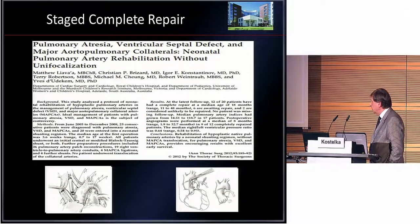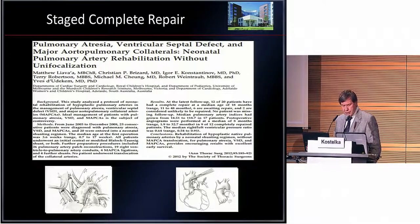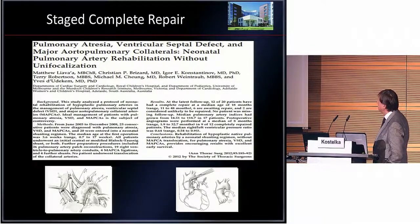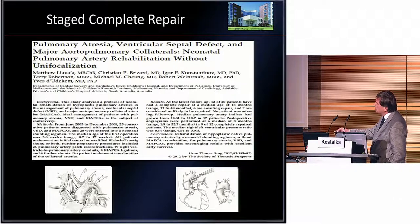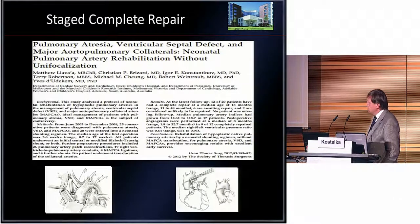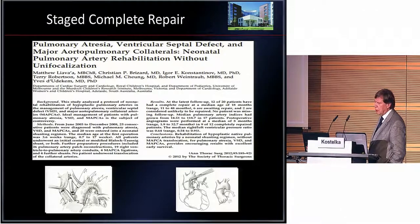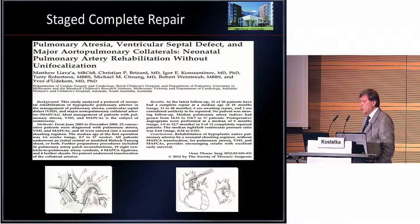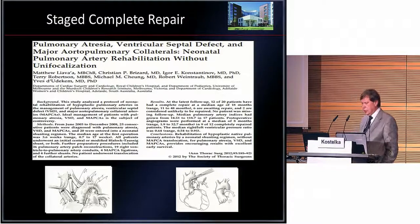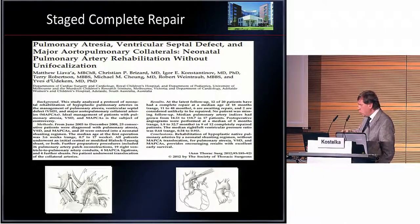Regarding staged complete repair, we look at Christian Brissard's work on unifocalization of MAPCAs, published in 2012. He starts in the neonatal period — patients are 3–6 weeks old, ranging 0.7 to 70 weeks — using a modified Blalock-Taussig shunt, a truncus-like graft. He waits for a couple of months, then assesses the growth of the pulmonary arteries and proceeds to palliation — patching of the pulmonary arteries and placing an RVPA conduit — to promote growth before going to biventricular repair.